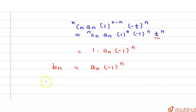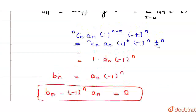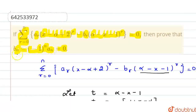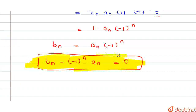Now, taking this term to the left-hand side, we get bn minus (-1)^n · an equals 0. This is exactly what we had to prove: bn minus (-1)^n · an equals 0. So we have reached the required proof. Thank you.